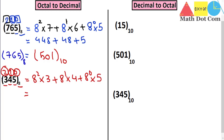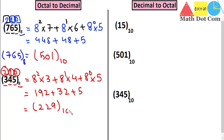So what we get is 192 plus 32 plus 5, which gives the answer 229 in base 10. We have successfully converted the octal number 345 (base 8) into the decimal number 229. This is the method of conversion.